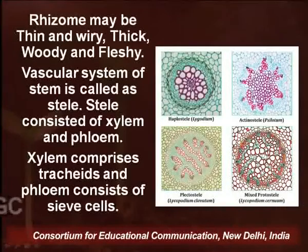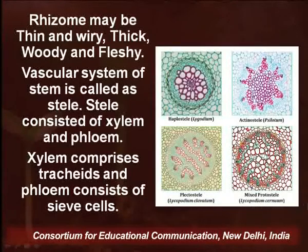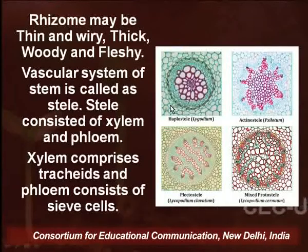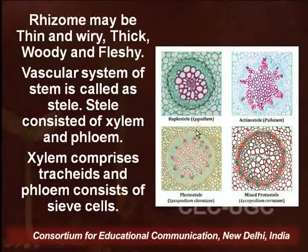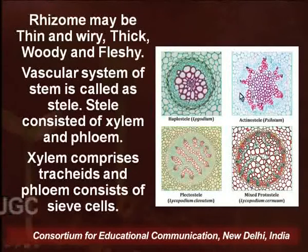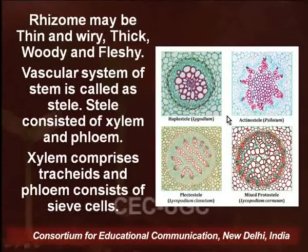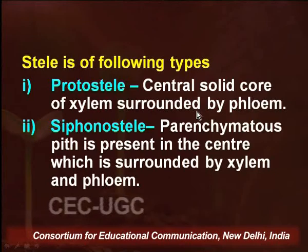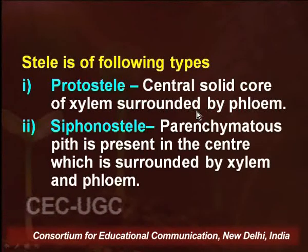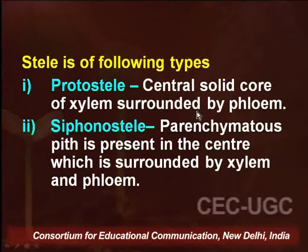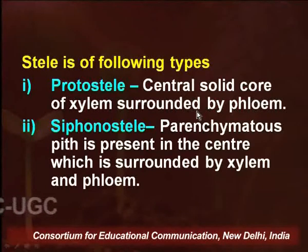The stele consists of xylem and phloem. The xylem comprises tracheids and phloem consists of sieve cells. In cross-sections of various pteridophyte species, the xylem is surrounded by phloem or sometimes interrupted by patches of phloem. The steles in pteridophytes can be categorized broadly into two types: the protostele has a central solid core of xylem surrounded by phloem, whereas in the siphonostele there is a parenchymatous pith in the center surrounded by xylem and followed by phloem toward the outer side.